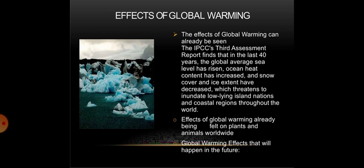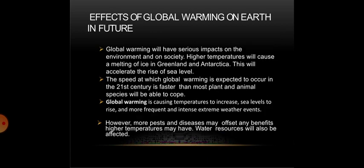Effects of global warming are already being felt on plants and animals worldwide. In the future, global warming will have serious impacts on the environment and on society. Higher temperatures will cause melting of ice in Greenland and Antarctica, which will accelerate the rise of sea levels. The speed at which global warming is expected to occur in the 21st century is faster than most plant and animal species will be able to cope with.